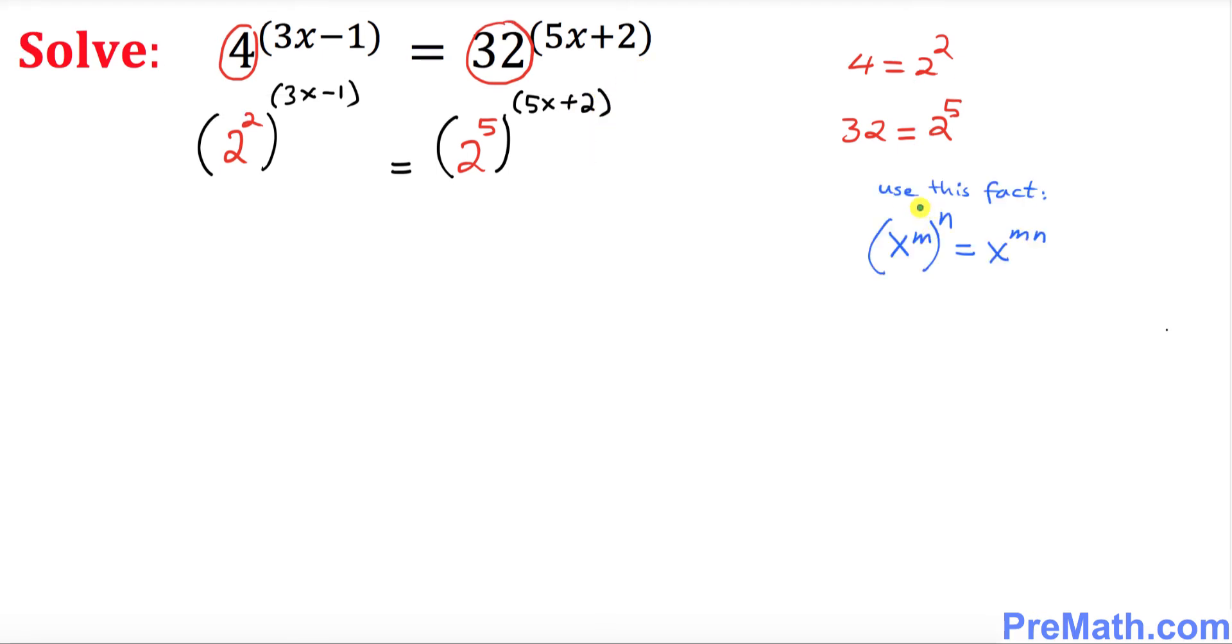Now look at this fact: if we have x to the power of m, and then another exponent n, that can be written as x to the power of m times n. That means these two exponents get multiplied.